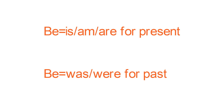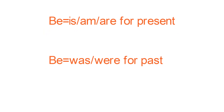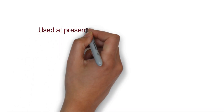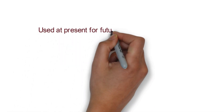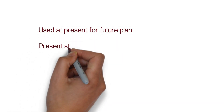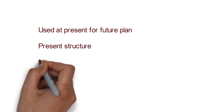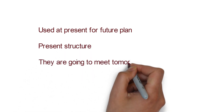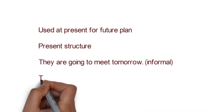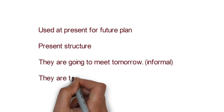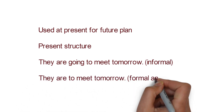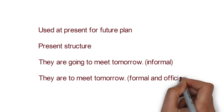Both structures are used at present for future plans. Their present tense structures are: 'They are going to meet tomorrow' is the informal structure, and 'They are to meet tomorrow' is the formal and official structure.